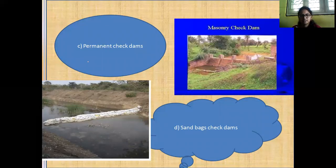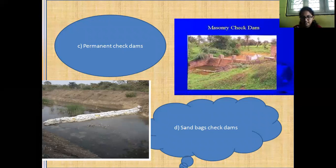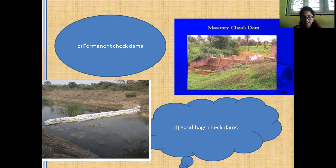The next types are permanent check dams and sandbag check dams. Permanent check dams are constructed using masonry and rocks. The permanent check dams help to retain runoff and silt, increase the infiltration of water and increase the water level in the aquifer.